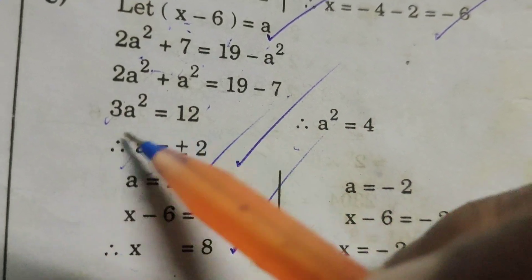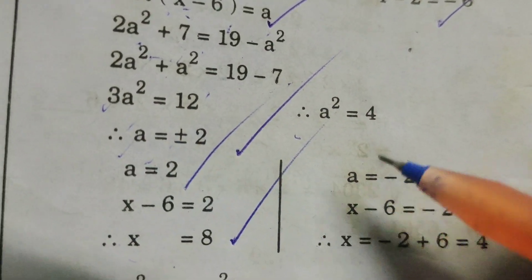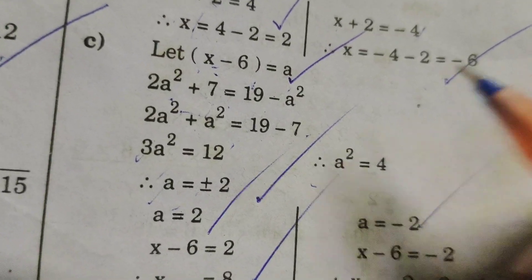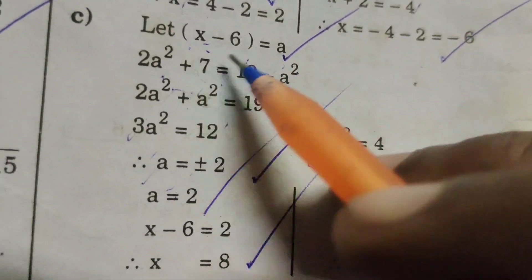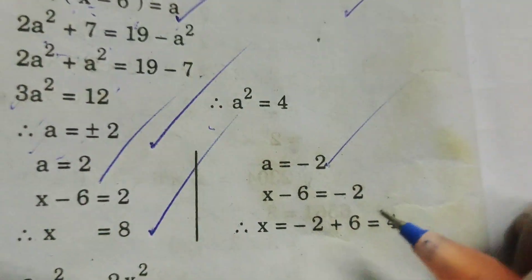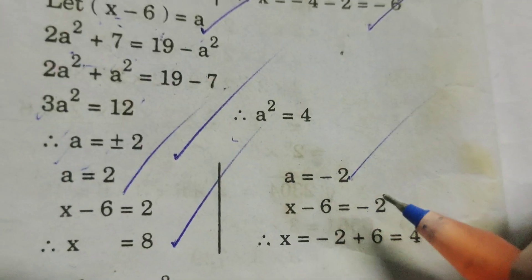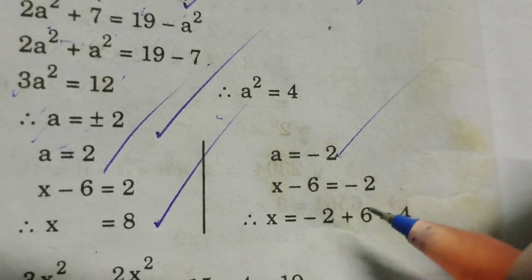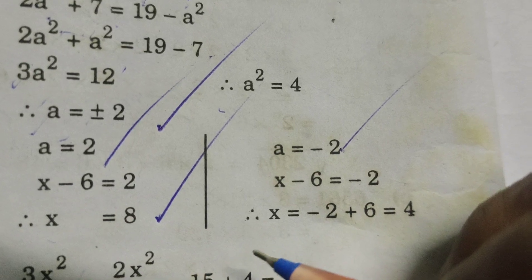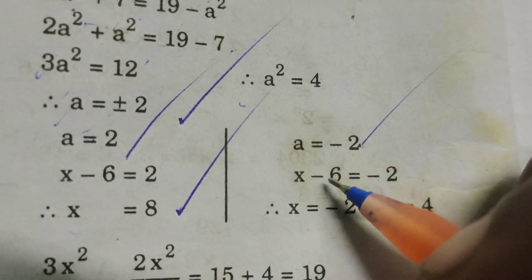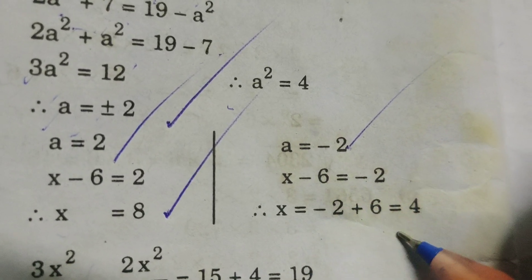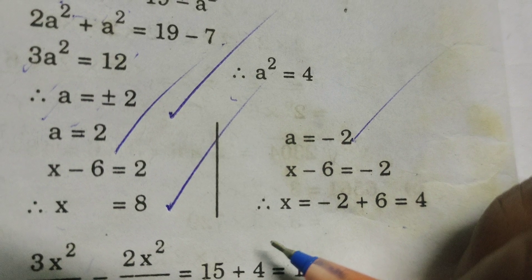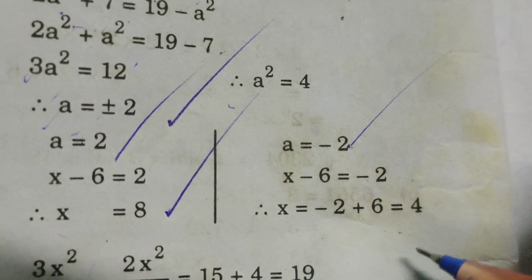Suppose if a equals to minus 2, then what is the value of x here? x minus 6 equals to minus 2. Then x equals to minus 2 plus 6.